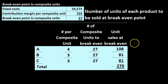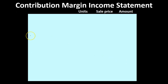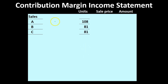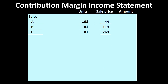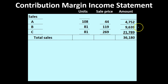We now verify with a contribution margin income statement, expecting a bottom line of zero since we're testing the break-even. For sales: 108 × $44 = $4,752; 81 × $119 = $9,639; and 81 × $269 = $21,789, totaling $36,180 in sales. For variable costs using actual prices — $27, $72, $97 — we calculate 108 × $27 = $2,916, and so on for B and C, totaling $16,605 in variable costs.